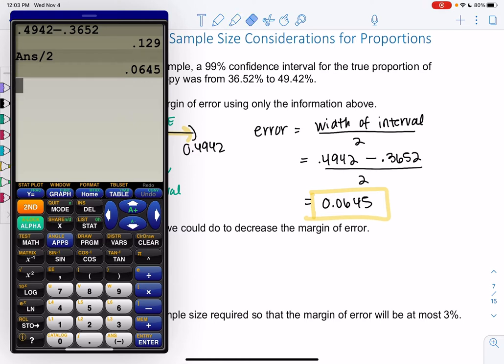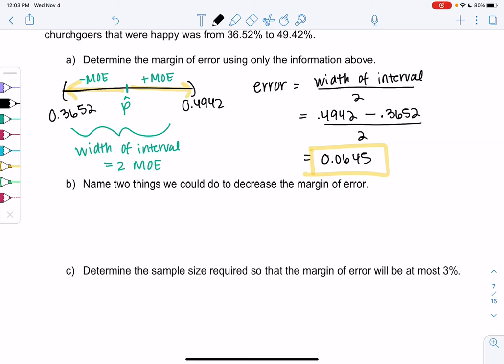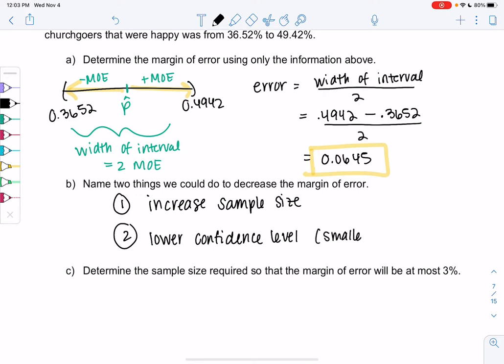There are two ways to decrease the margin of error. Maybe we've decided 6% is too much error. One option, this has been decreasing error throughout the semester, is to increase sample size. The second option, which is not as good, would be to lower the confidence level. We learned last time that the intervals got wider with a larger percent, so a smaller percent would be a more narrow interval. But this is worse, basically lowering our standards. So the better case is to increase sample size.